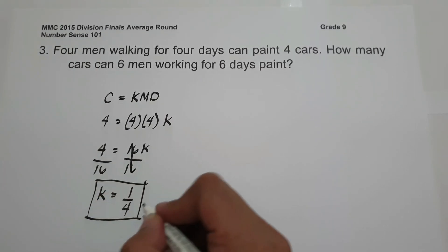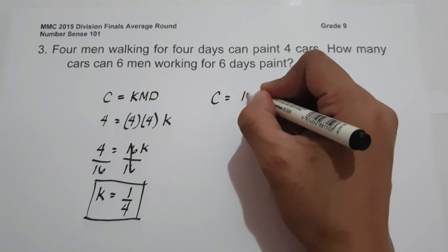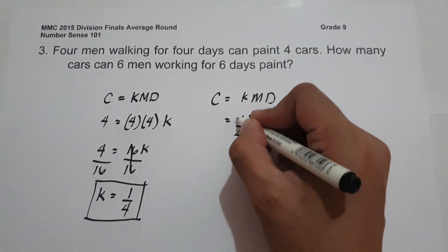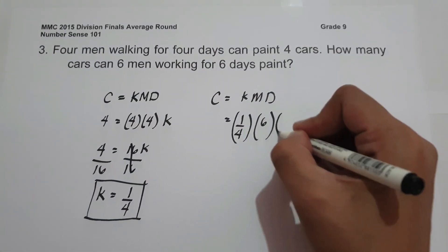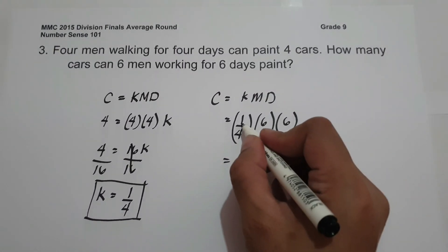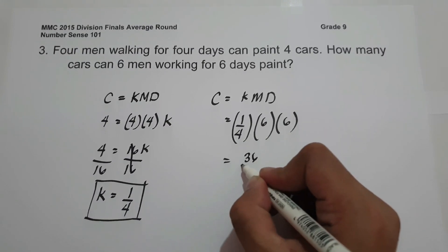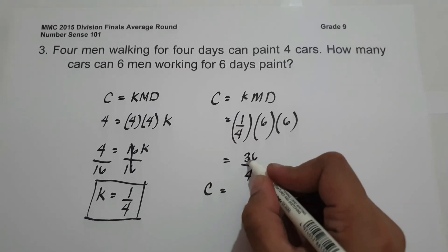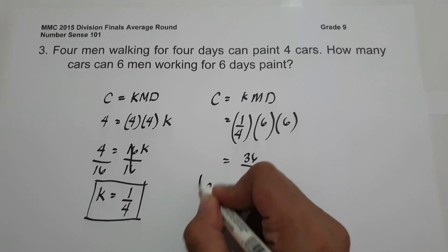Using K to find the number of cars: C equals KMD equals 1 fourth times 6 times 6. So 1 times 6 is 6, times 6 is 36, divided by 4. The number of cars is 36 divided by 4, which is 9. This will be our answer.